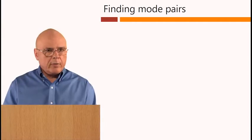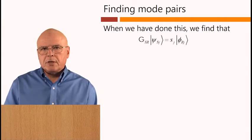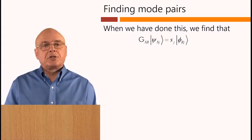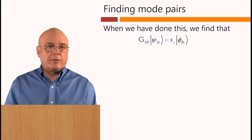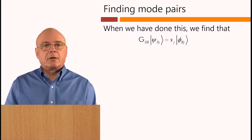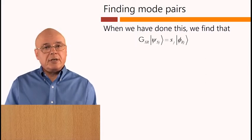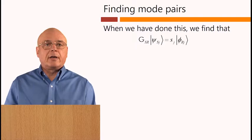Now, when we have solved these two problems, we find that if we operate on one of these source eigenfunctions, Psi Sj, with the coupling operator GSr, we get Sj times the corresponding one of the receiving eigenfunctions,